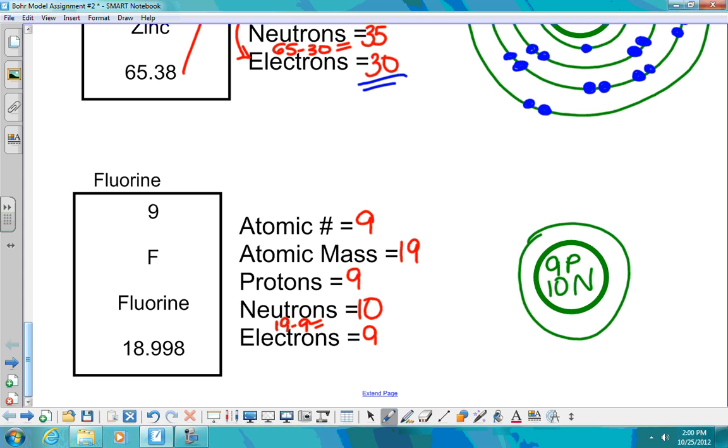I know I'm going to need one shell. It's going to have two. I'm going to need another shell. On my first shell, I know I'm going to need two. I'm looking to get nine total. So now nine minus two is seven. Seven more. So now I have nine and this is my fluorine Bohr model atom.